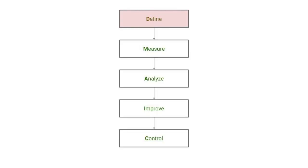When considering how you can improve customer experiences using DMAIC: first, define the business problem, goals, resources, project scope, and project timeline. Next, measure — conduct performance metrics and data collection to establish baselines and measure success. Then analyze — find the root causes of problems and understand their impact. Next, improve — implement a reasonable solution to the problem. Lastly, control — implement the changes and stay on top of monitoring the updated processes you've established.